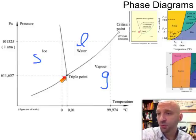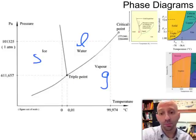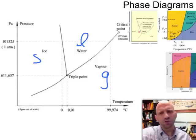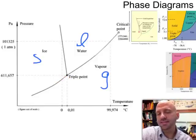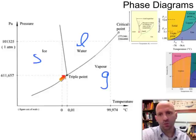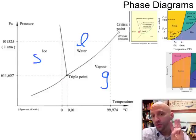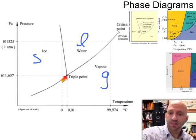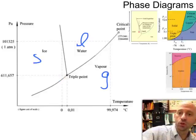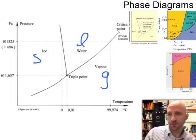We've got a couple of points to address on phase diagrams. The first is called the triple point. It's pretty much what you might think it is: it is the unique temperature and pressure at which all three phases — solid, liquid, and gas — are present and in equilibrium.